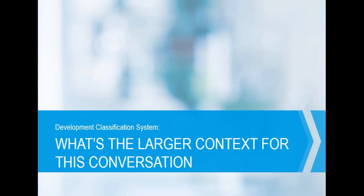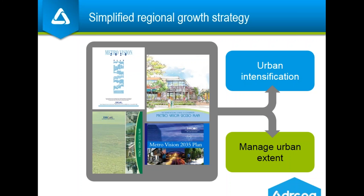Before we start into the development classification system, we need to back up — this system is just one small part of a larger conversation the DRCOG board is just starting about the UGBA. Since the adoption of Metro Vision 2020 back in 1997, the region has had a two-pronged growth strategy: urban intensification through the local identification and designation of urban centers, and managing the extent of urban development using an urban growth boundary as a tool to help increase density and meet other Metro Vision goals.